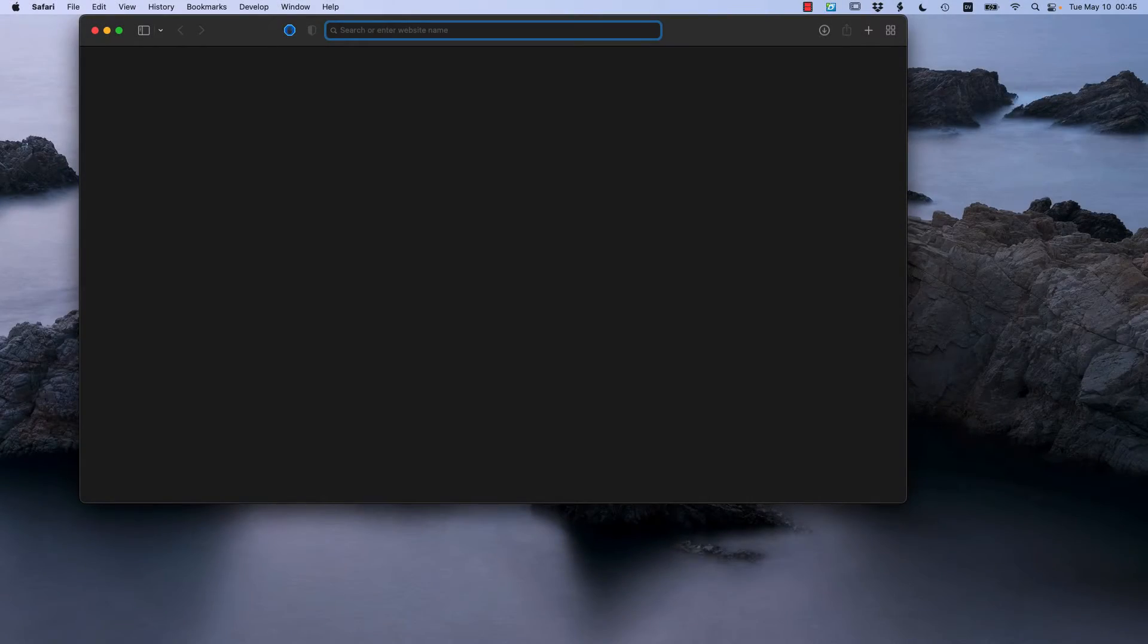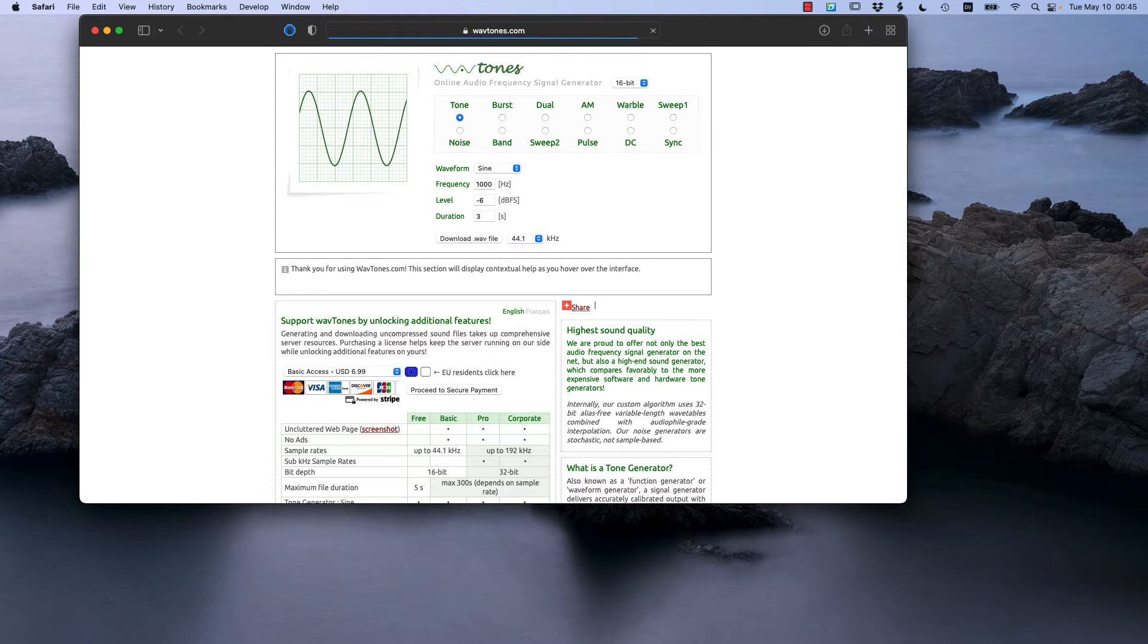To create a test tone, simply visit wavetones.com, type in 400 hertz for the frequency, and five seconds for the duration, then click the download wave file button. Play the downloaded file on repeat on your media player and adjust the volume level on the media player until you get the desired output voltage.